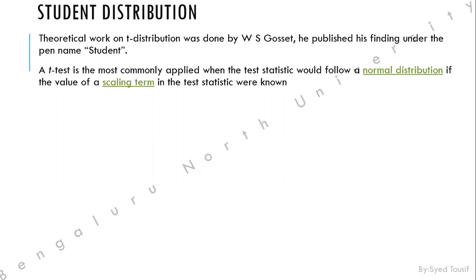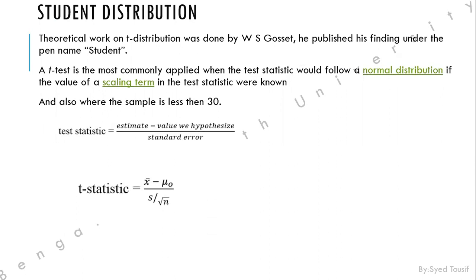He used the pen name 'Student' because he was working under an organization whose condition was that findings could not be published under individual names — only under the organization name. A t-test is most commonly applied when the test statistic would follow a normal distribution. Importantly, when the sample size is very small — less than 30 — a normal distribution won't give proper results, so we use the Student t-test instead.